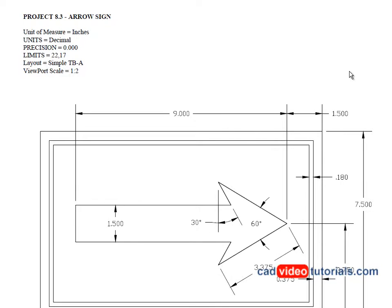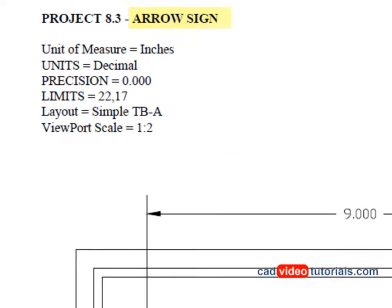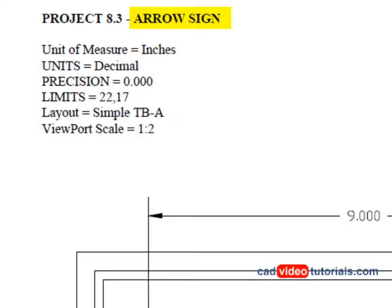In this project, we'll be drawing the object shown here, which is an arrow sign. You can see that the units of measure is in inches — decimal inches with a precision of three places to the right of the decimal point. And the limits for the drawing will be set to 22 by 17.